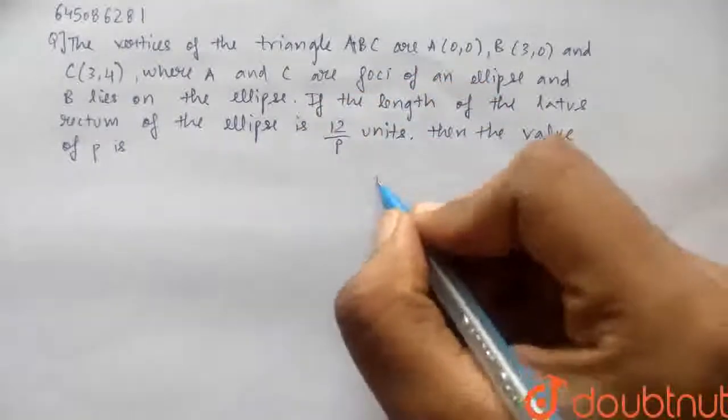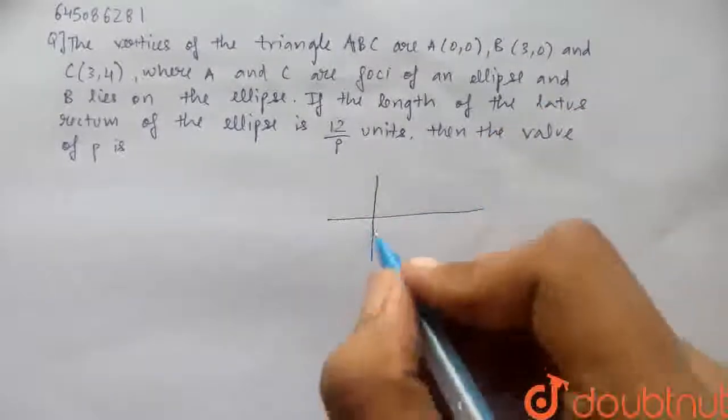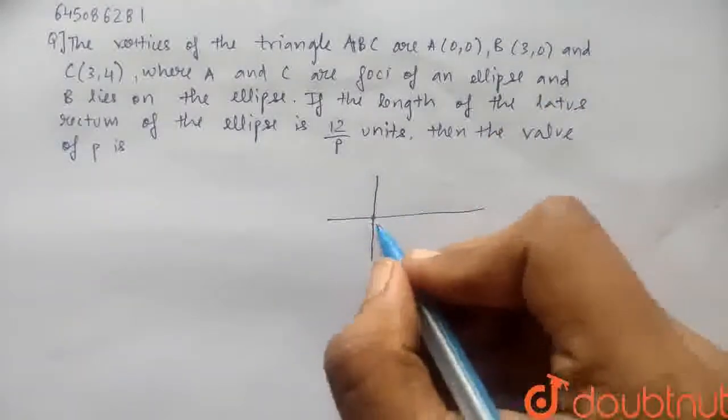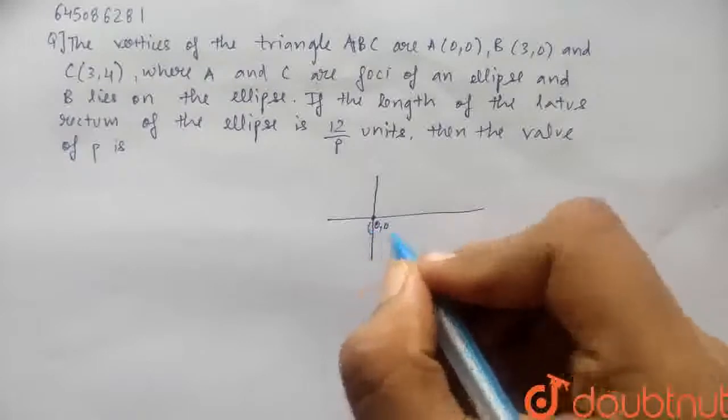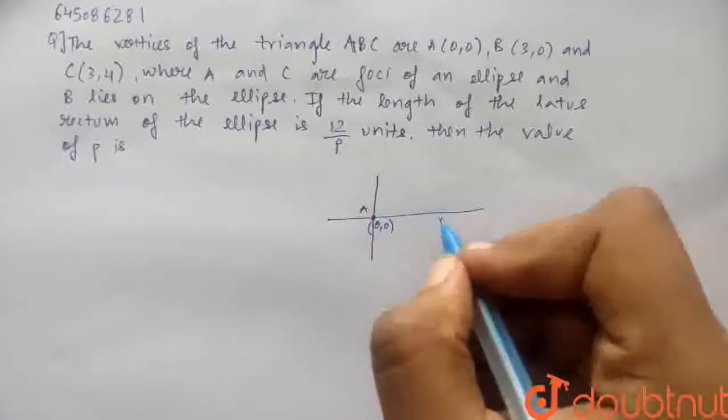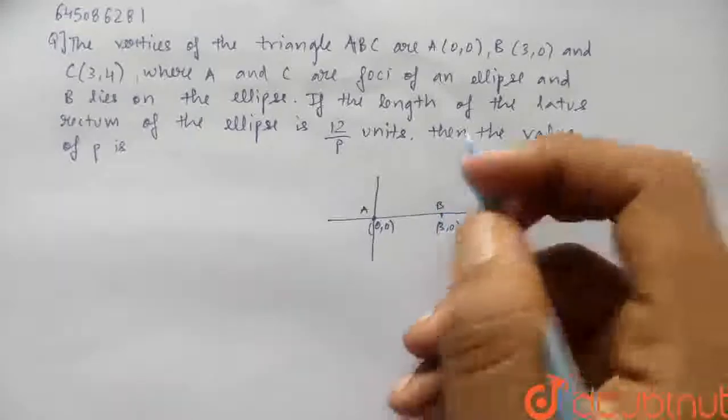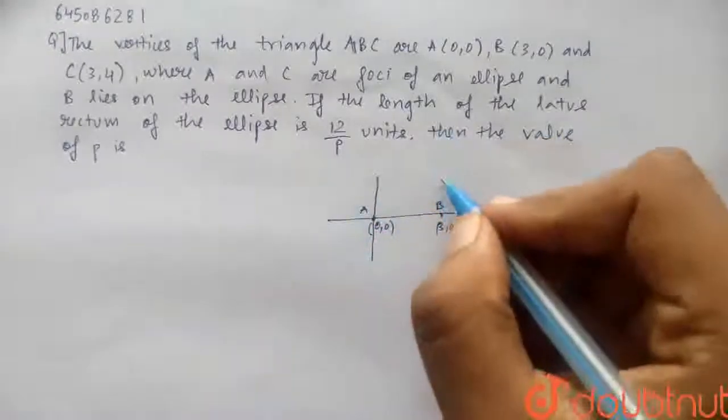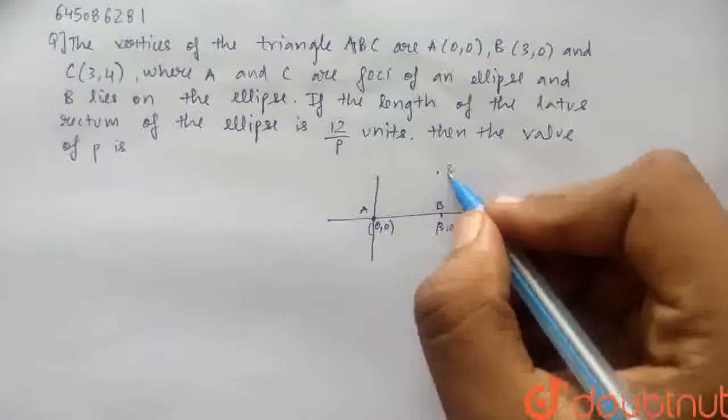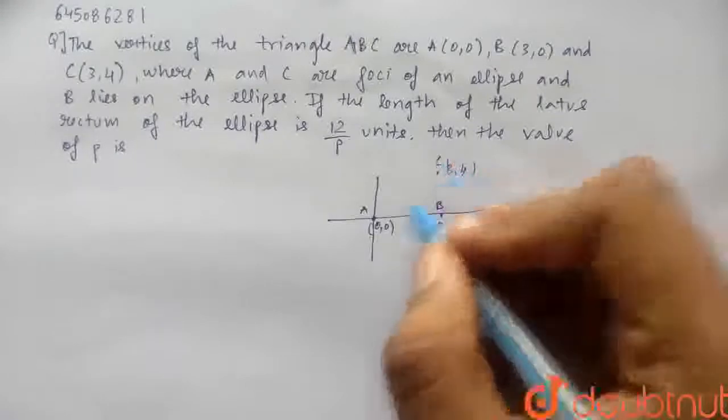Now I will just draw the graph for you students. So the graph will look something like this. Basically this is the origin which is the point A, 0,0. This is the point A. Now, 3,0 will lie somewhere here. This is the point B. Similarly, the C point will lie at 3,4 somewhere above B. So it will be 3,4 which is the point C.